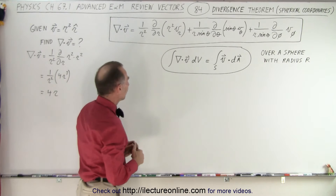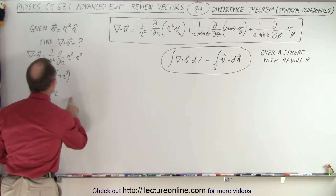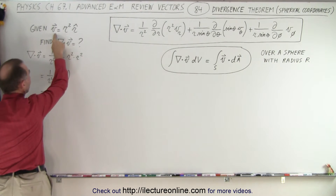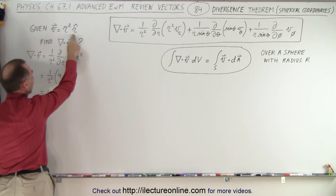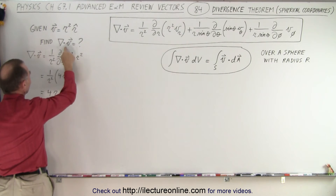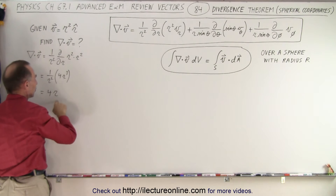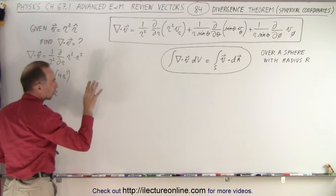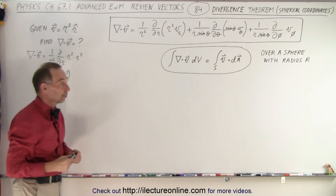Going back to what we did last time: we ended up with a vector function equal to r squared in the r-hat unit vector direction. Then we took the divergence of that, which we did in the last video, and it was equal to 4r. So now we're going to integrate that over the volume.